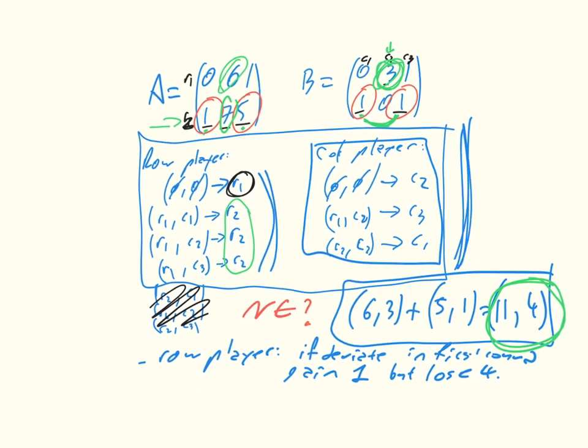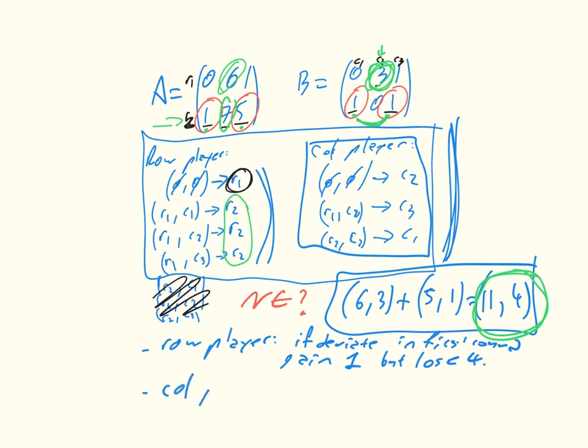And then if we look at the column player, well, the column player has no reason to deviate in the second stage. Because in the second stage we're here, the row player is playing R2. And the column player has no reason to deviate from either of these two options, depending on what the row player does. The only deviation the column player has to make is in the first stage. But remember, in the first stage, we're assuming the row player is playing R1. So then the column player has got a choice between 0, 3, and 1. So no reason to deviate.